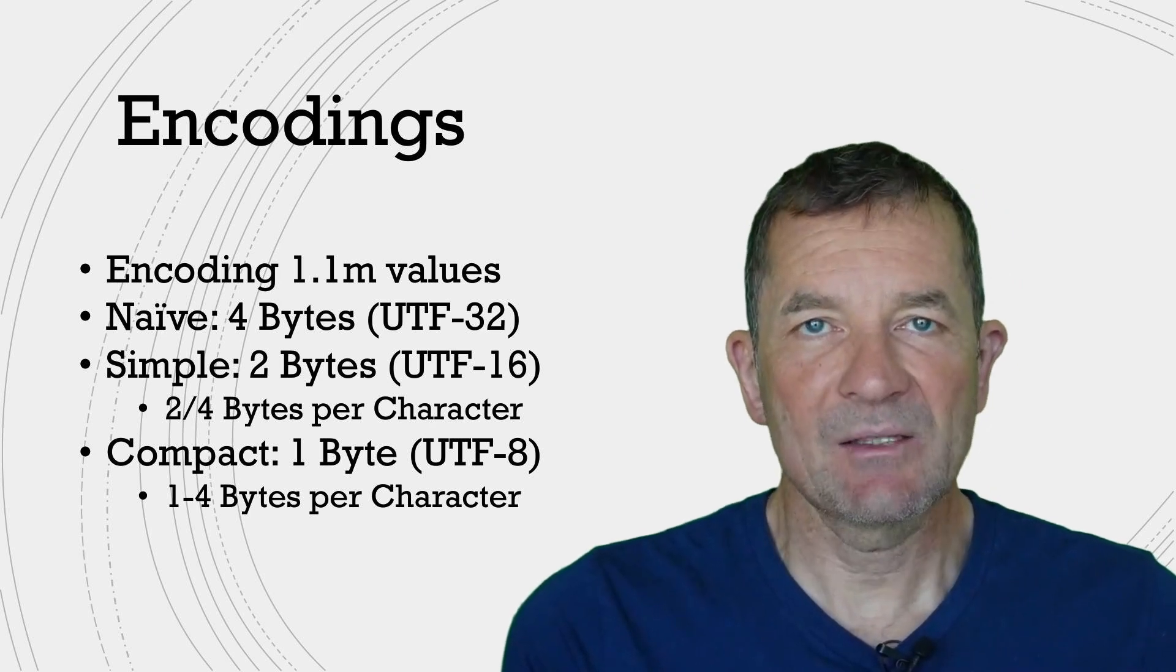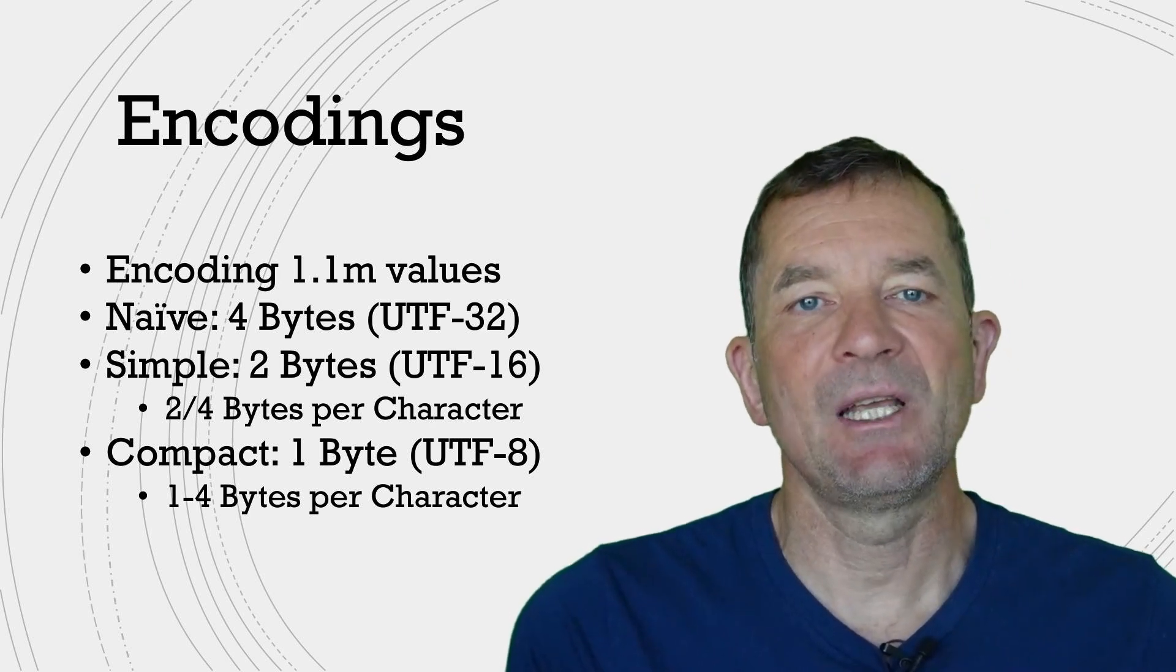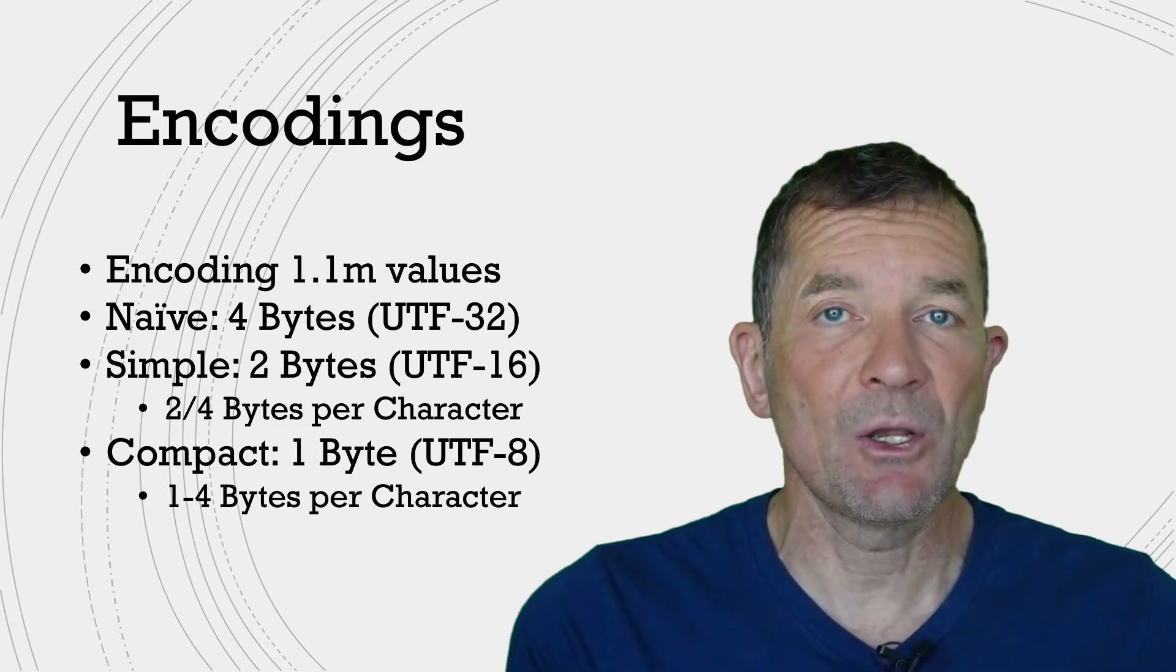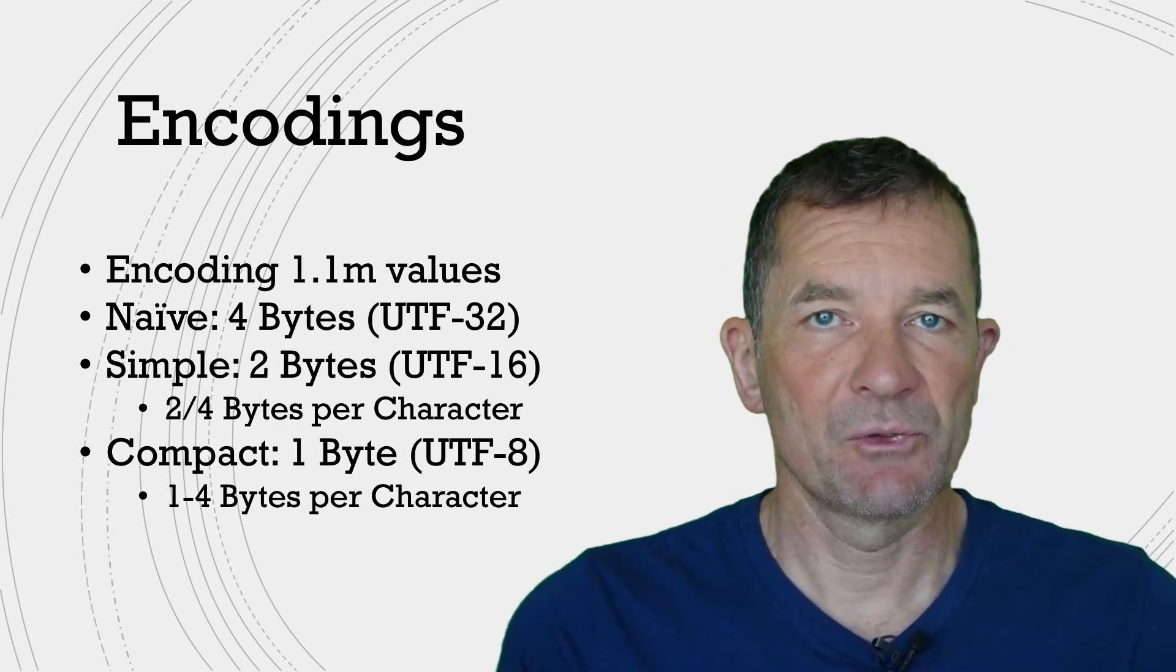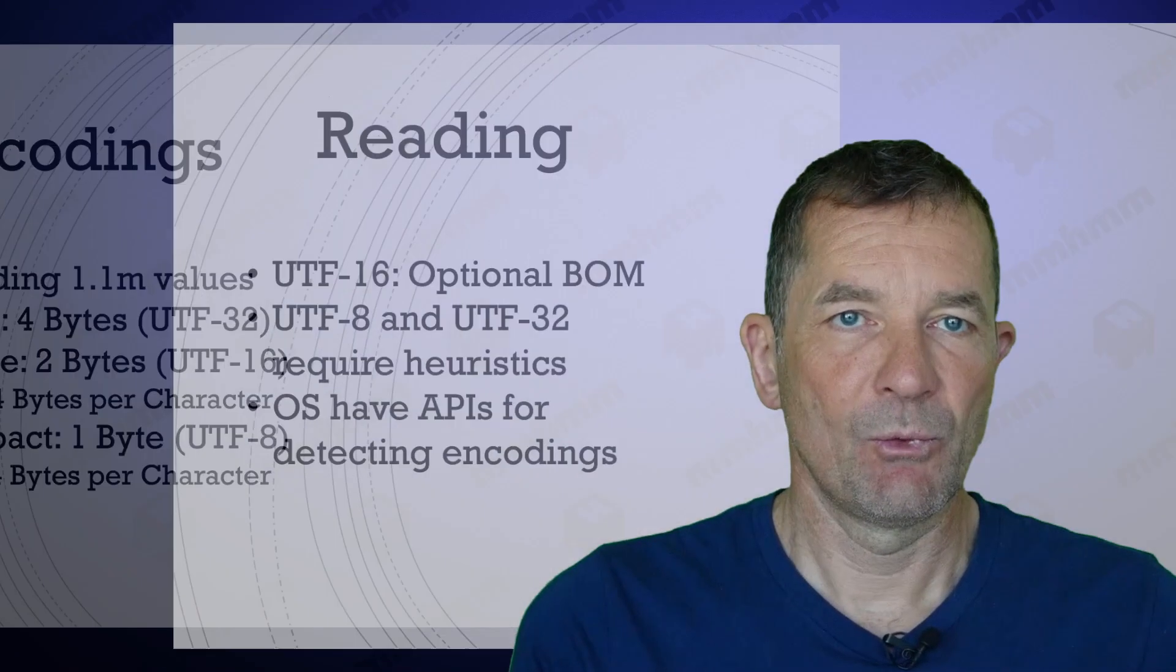One is called UTF-32, which encodes each character in four bytes. And then there are some which are a little bit more complex but also more efficient, called UTF-16 and UTF-8. If you want to learn more about those encodings, please check out my video where I just talk about those encodings and explain a little bit how those work.